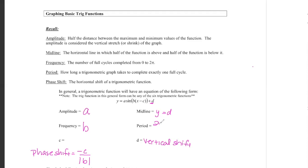The period is equal to two pi over b, and the period is how long it takes the graph to complete one full sine or cosine curve. The last thing we're going to need to graph our trig functions is the x-scale, which tells us how we need to label our x-axis to correctly graph our function. The x-scale is equal to the period over four.